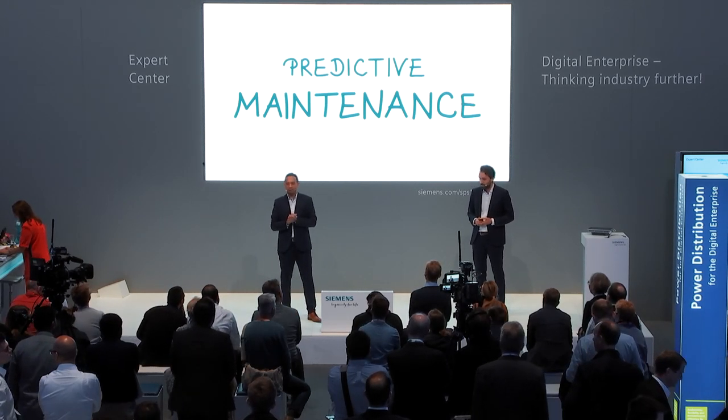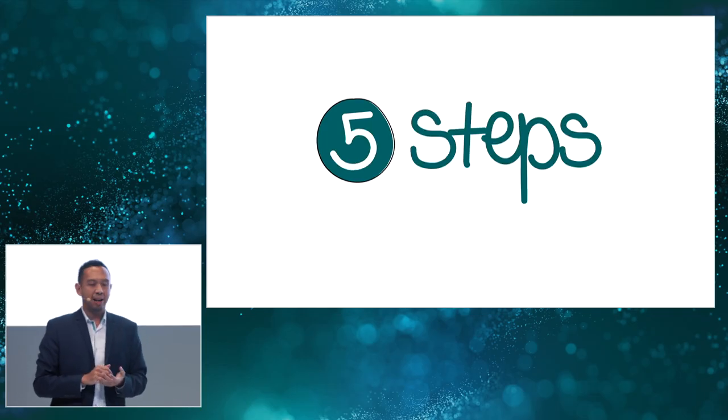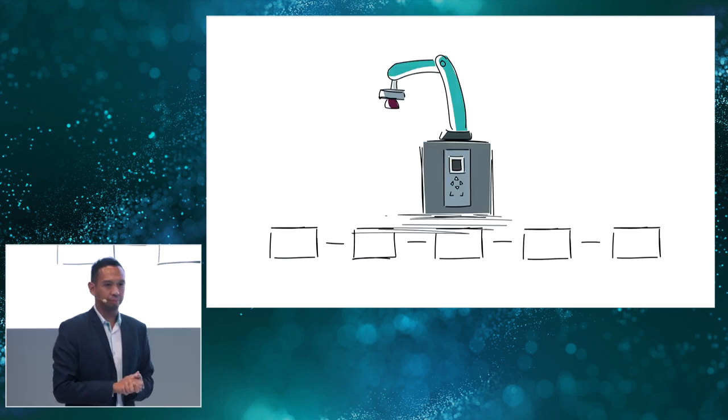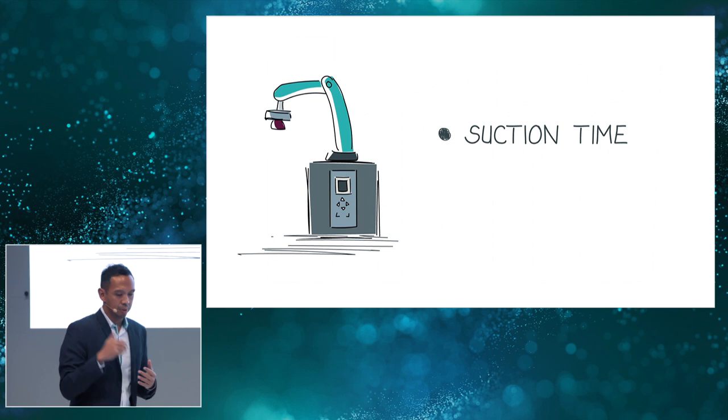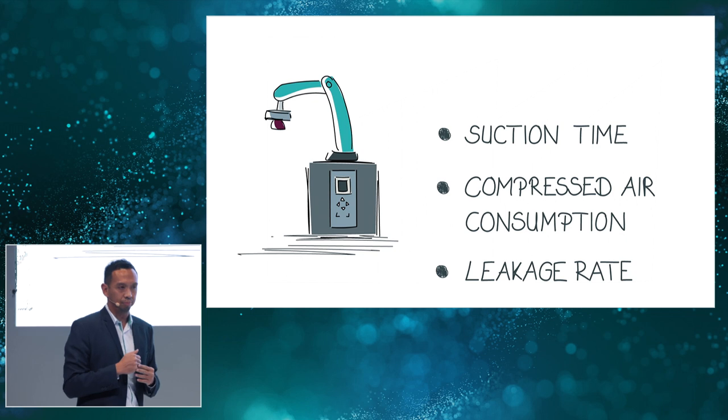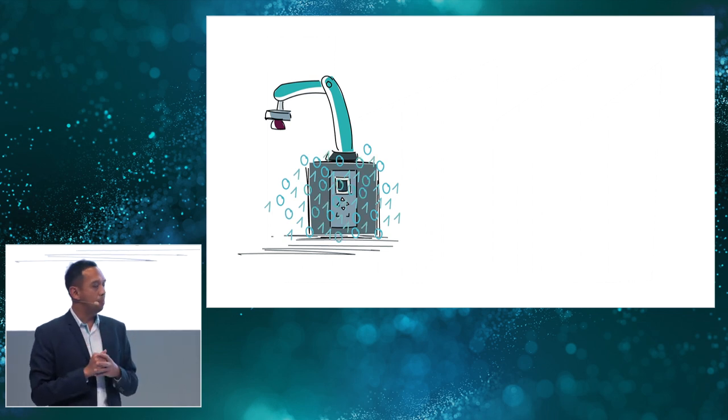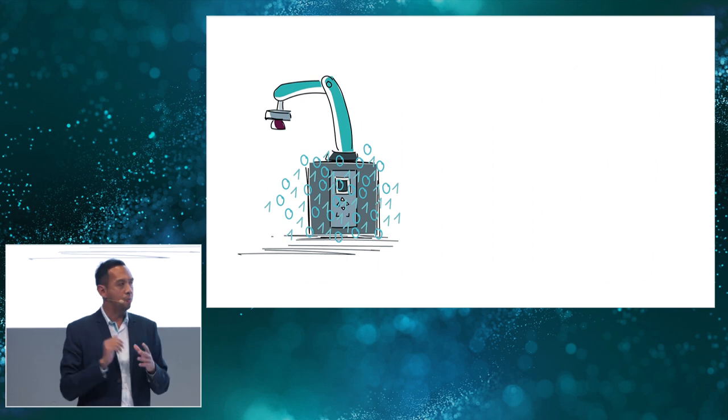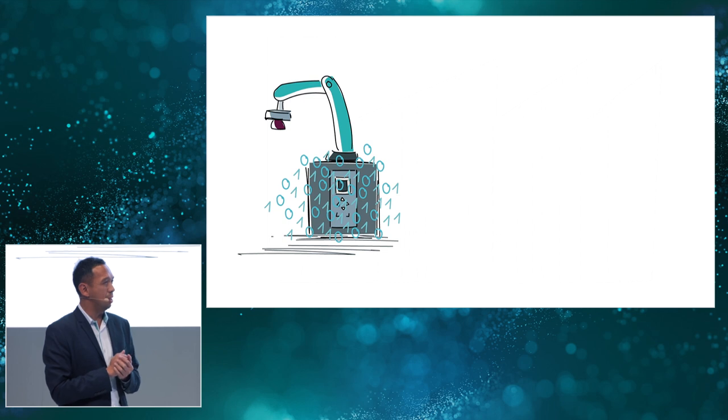And thanks to edge computing, now we show in five steps how it works. Let's start with the first step. To make an analysis, we need the data, the important data, like suction time, compressed air consumption, and leakage rate. We have already the data in the PLC, but the PLC is responsible for the control of the machine. The PLC doesn't deliver data analytics, Philipp.